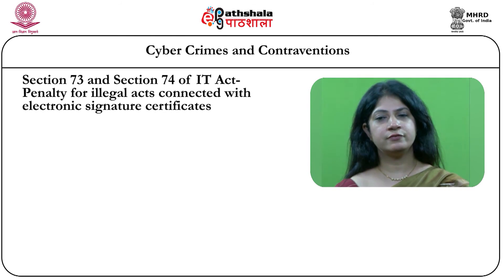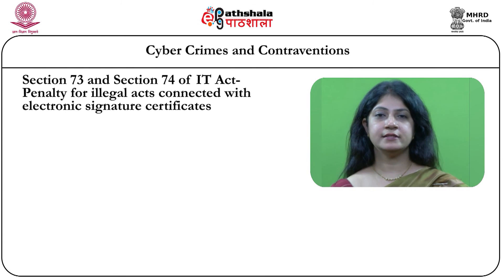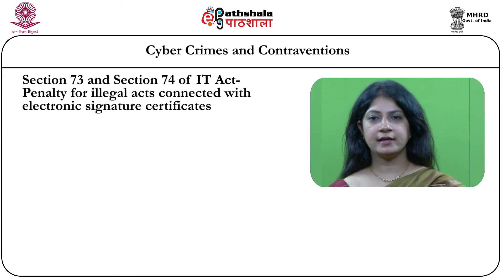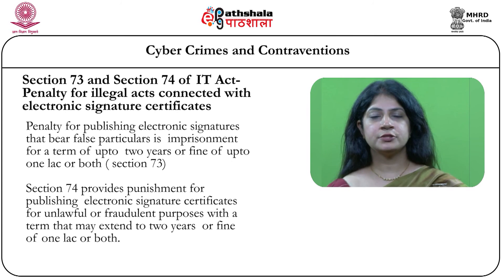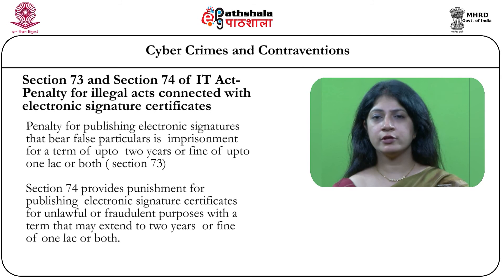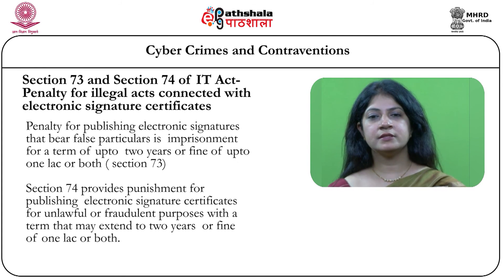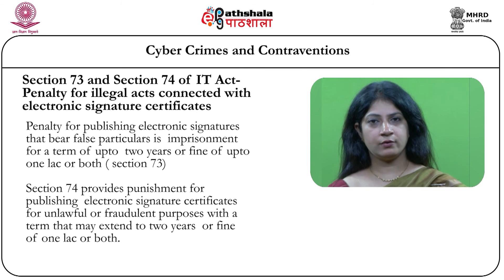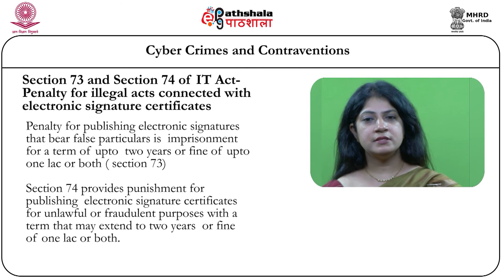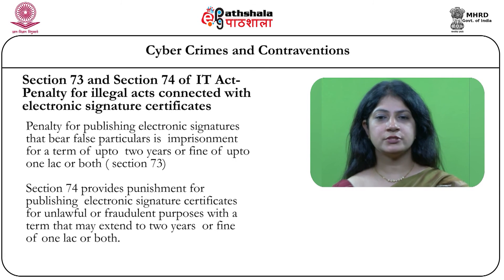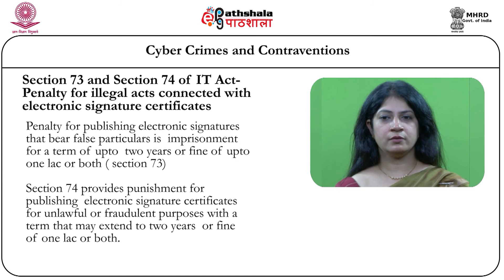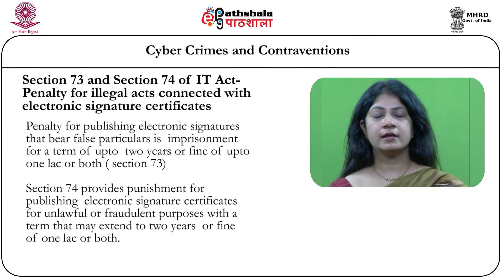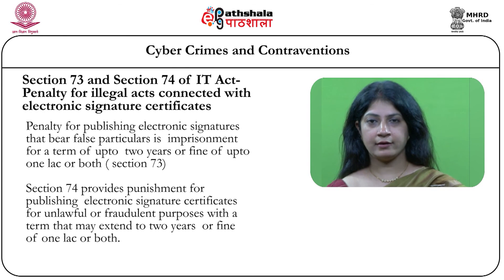Sections 73 and 74 of the IT Act deal with penalties for illegal acts connected with electronic signature certificates. Section 73 provides punishment for publishing any electronic signatures which bear false particulars — imprisonment up to two years or fine up to one lakh or both. Section 74 provides punishment for publishing electronic signature certificates for any fraudulent purposes, which is again punishable with a term extending up to two years or fine of one lakh or both.